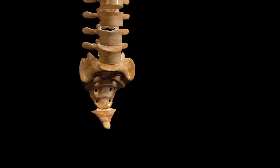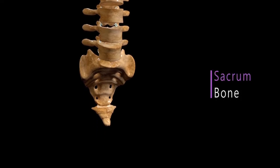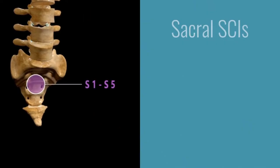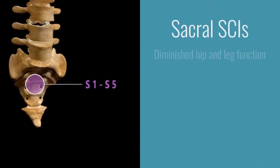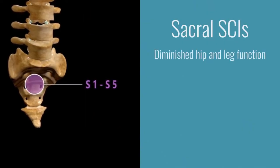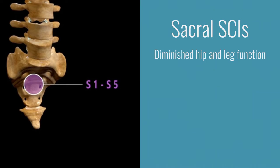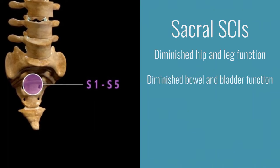The last five vertebrae are the sacral vertebrae, which run through the pelvis. Injury to this part of the spinal cord may impact hip and leg function, but individuals will often be able to walk. However, individuals may lose bowel or bladder control.